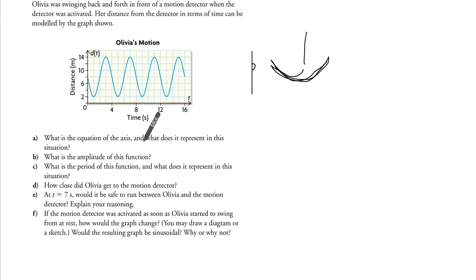What is the equation of the axis and what does it represent in this situation? So, the equation of the axis clearly is 8. We can always do the average of the minimum and the maximum which is 2 plus 14 divided by 2 which gives you 8.